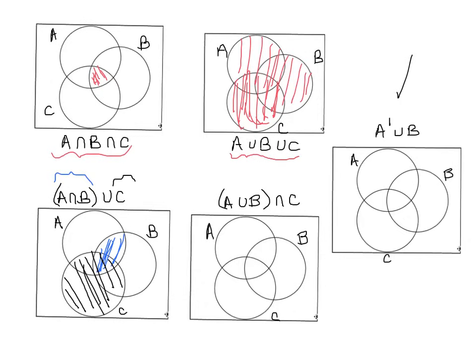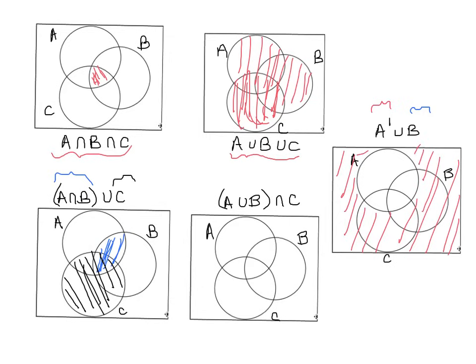Now let's do A complement union B. Since it's a union, shade everything in A complement — everything outside A — as well as everything in B. It's the union, so you shade everything in both sets: everything in A complement as well as everything in B.